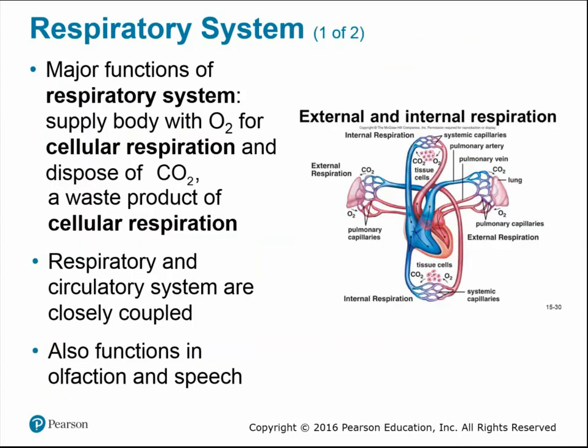The major functions of the respiratory system are basically to supply the body cells with oxygen so that they can undergo cellular respiration and make ATP energy, and also to dispose of carbon dioxide, which is a waste product of cellular metabolism. The cardiovascular and respiratory systems are closely linked — the pulmonary circuit pumps blood to the lungs to receive oxygen and return it to deliver to tissue cells. The respiratory system also has functions in olfaction (sense of smell) and speech.